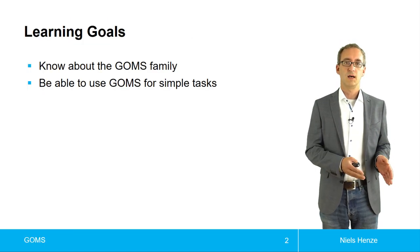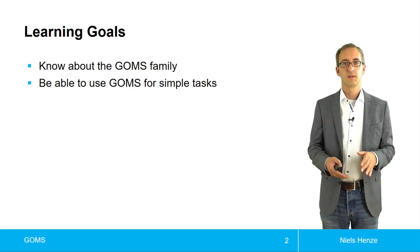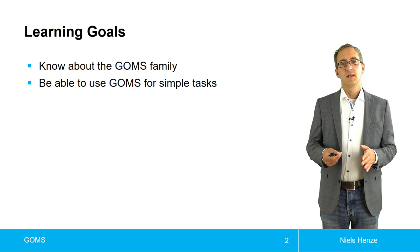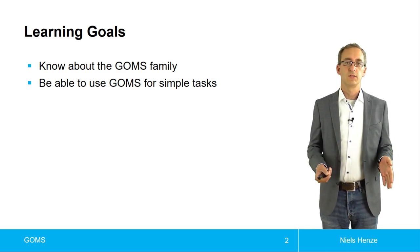If we go from very basic tasks, which can be modeled by something like Fitts' law to more complex ones, something like KLM, then we at one point lose the ability to predict actual task completion times.